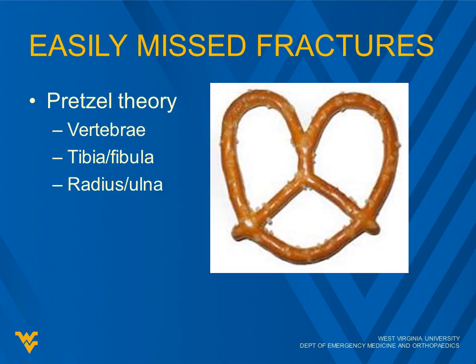Some easily missed fractures — we need to think about the pretzel theory for this. When you have a ring of bone, just like a pretzel ring, you can't break that in just one place. You have to break it in two because of the rigid nature there, especially of adult bones.